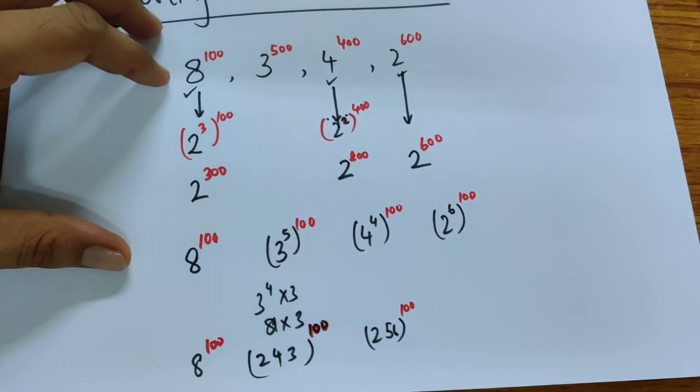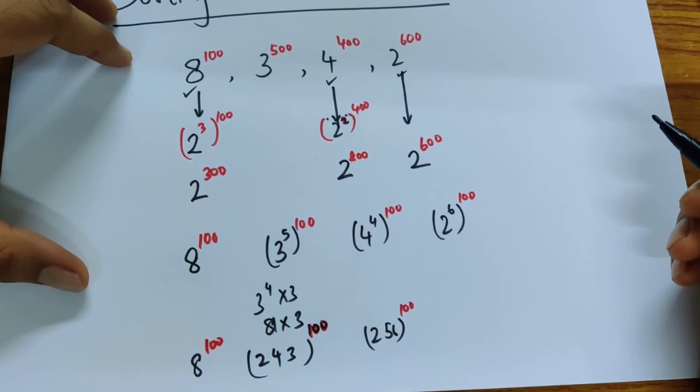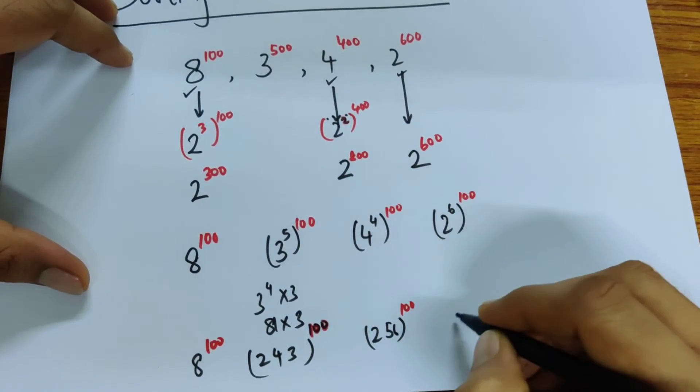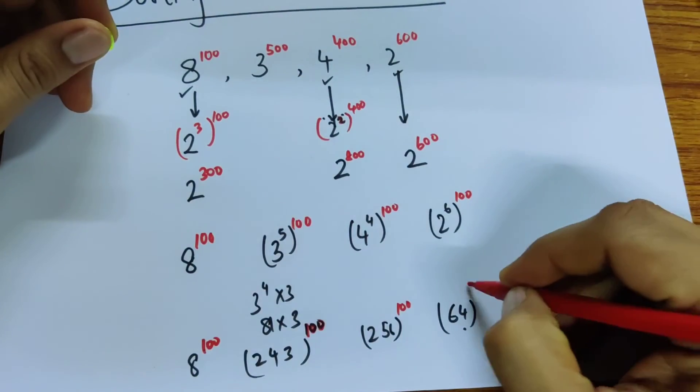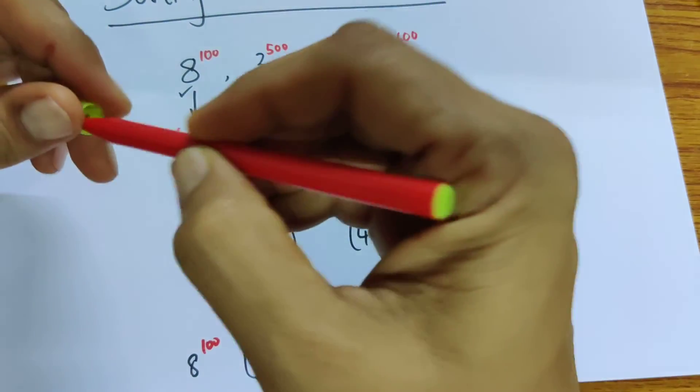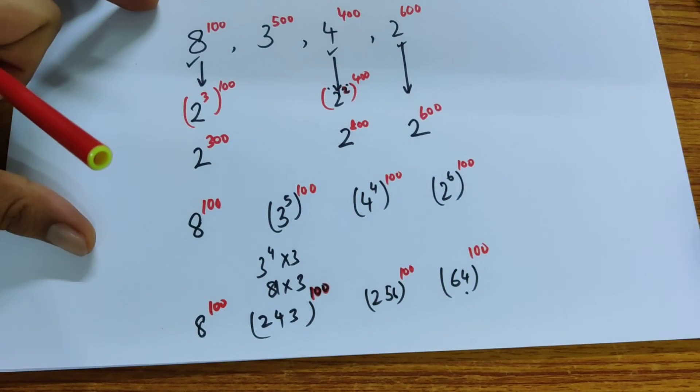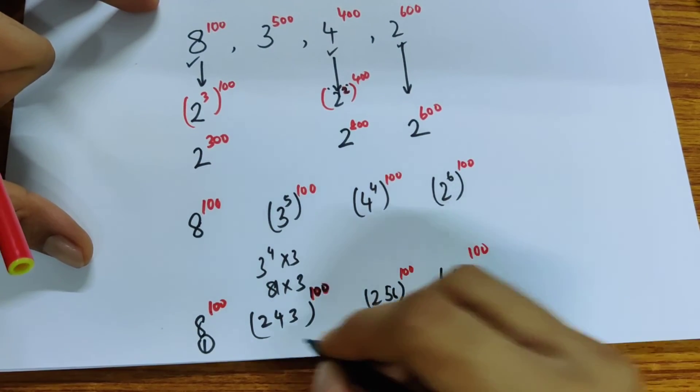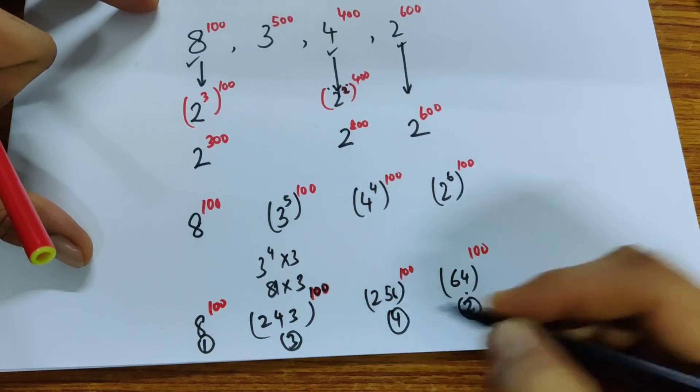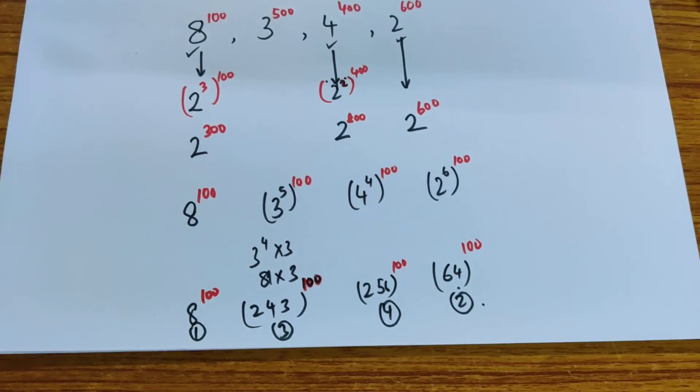This is 2 to the power of 6. 2 cubed is 8, so 8 times 8 is 64. So 64 to the power of 100. Now we have very clear rankings. This is the smallest, this is the second smallest, this is the third smallest. And there we go.